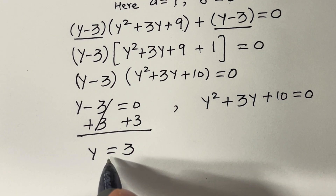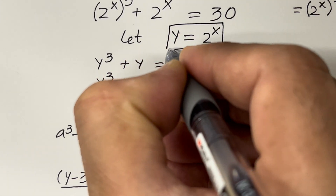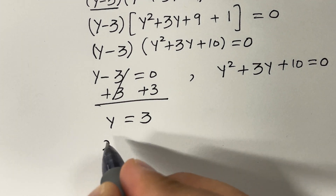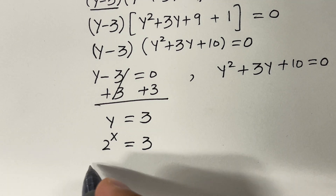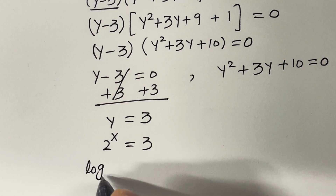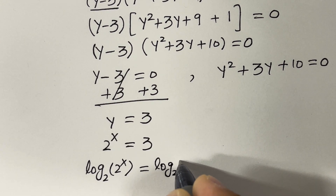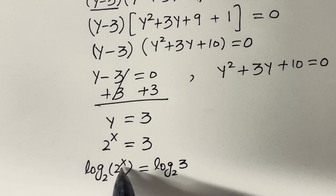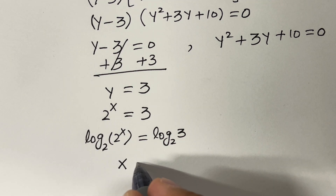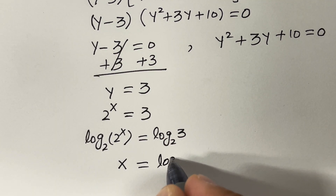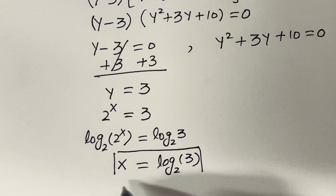Recalling that y equals 2 raised to the power x, we replace y with 2 raised to the power x, giving 2^x equals 3. Taking log base 2 on both sides, log base 2 and the exponent cancel, so x equals log base 2 of 3. This is one solution.